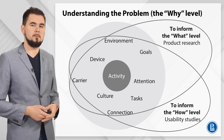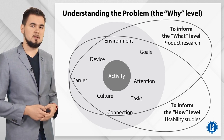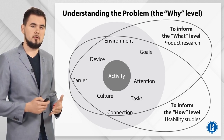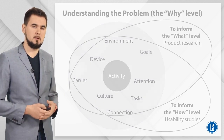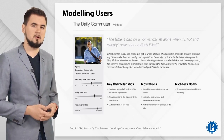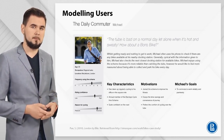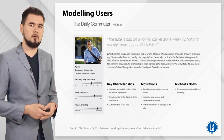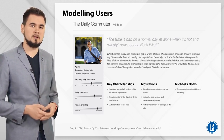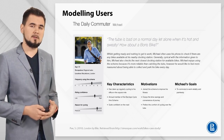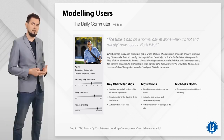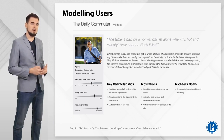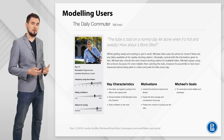As I mentioned earlier, one of the goal-directed design process features is the special attention to the transition from research to design. This transition goes through a modeling phase. One of the models used in the design process is called a persona — a composite user archetype that represents distinct groupings of behaviors, attitudes, and goals drawn up on the basis of user research results.